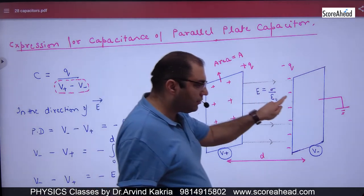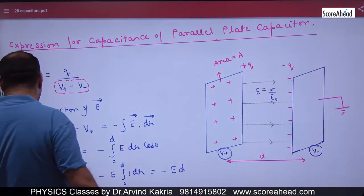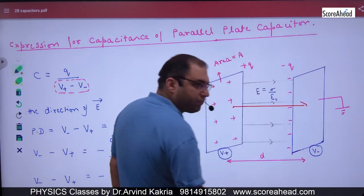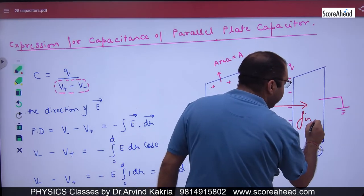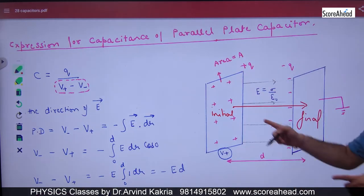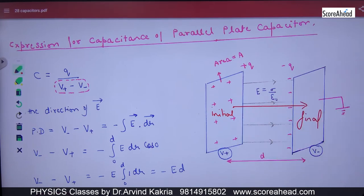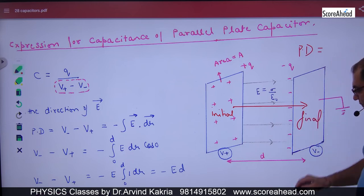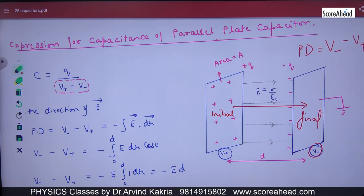When I move from the negative plate to the positive plate — from this plate to this plate — I am moving from here to here. So my starting point is the negative plate (initial point) and my ending point is the positive plate (final point). Therefore, final potential is V-negative and initial potential is V-positive. Potential difference is final minus initial: V-negative minus V-positive.